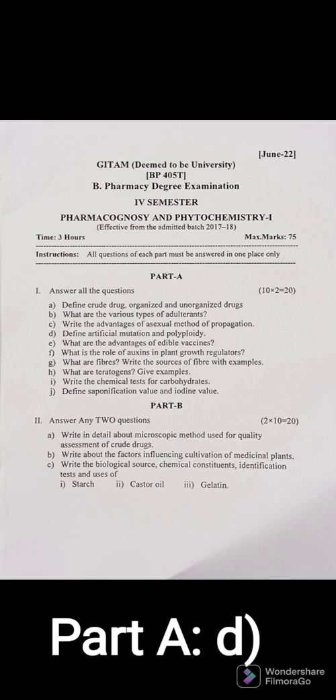Question 1D: Define artificial mutation and polyploidy. Artificial means by man. Mutation can be physical or chemical. Physical mutagens include ionizing radiation such as X-rays and UV rays, used to increase seed germination. Chemical artificial mutagens include alkylating agents and other chemicals which cause sudden changes in genes. Polyploidy means more than two complete sets of chromosomes; it is used to obtain good quality medicinal crops.